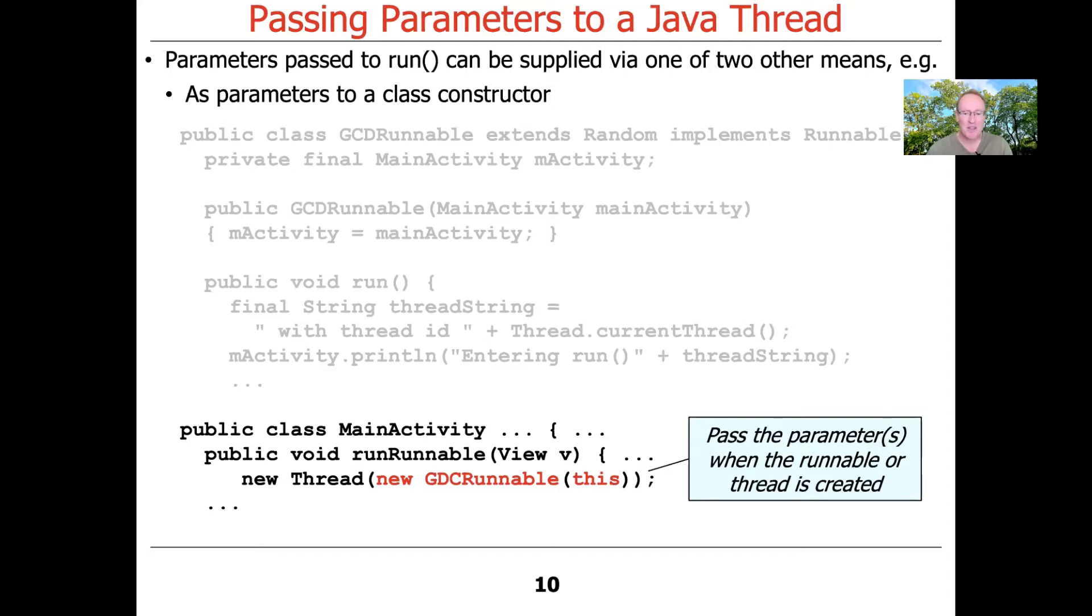It goes ahead and makes a new instance of GCD runnable passing in this. And this of course is the object of the main activity.